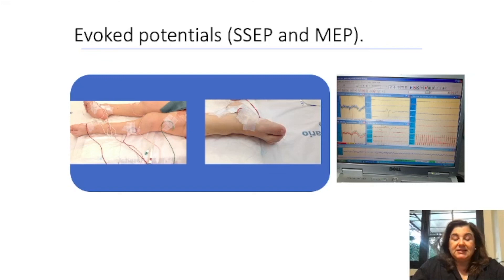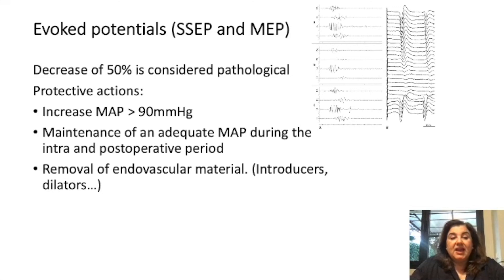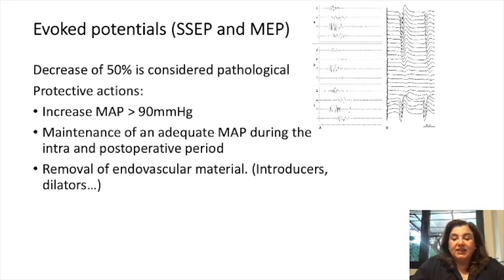Regarding evoked potentials, a decrease of 50% is considered pathological. Protective actions include increasing mean arterial pressure to higher than 90 millimeters of mercury, maintaining adequate mean arterial pressure during intra- and post-operative periods, and removing endovascular material such as dilators.